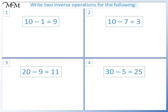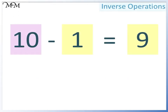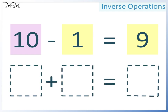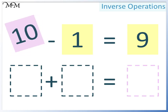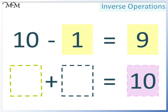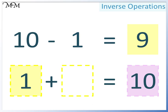Here are some questions for you to try. Write two addition calculations for each of the following. Question 1: 10 take away 1 equals 9. Because we are writing an addition, we must write the largest number in this space. In this space we can have either of the two smaller numbers — this time we will have 1, and so in this space we will have 9. 1 plus 9 equals 10.